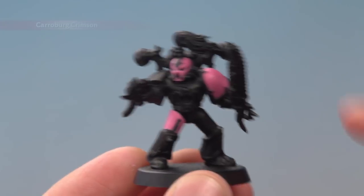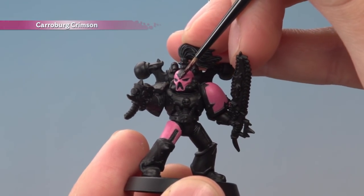Now we're ready to give that pink a bit more depth by applying a recessed shade of Carroburg Crimson on all the recesses around it.